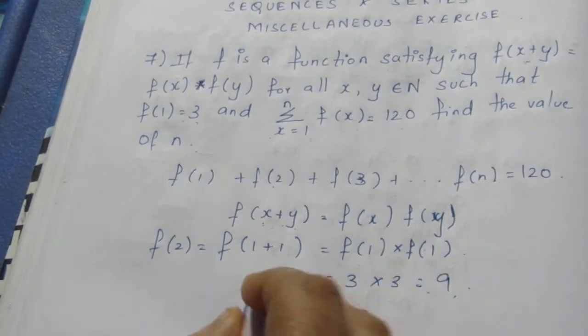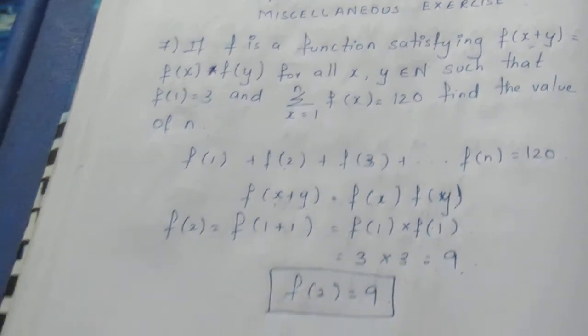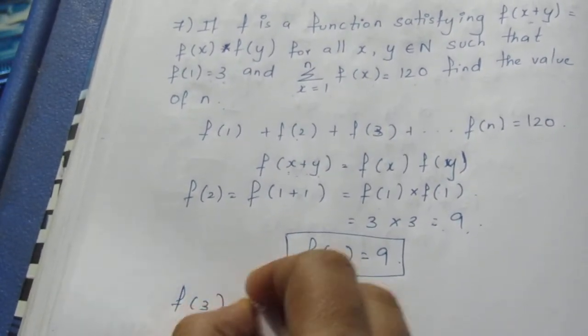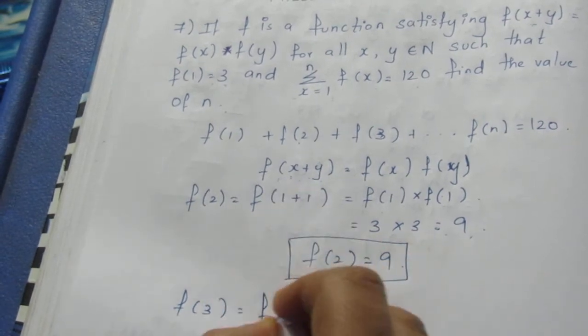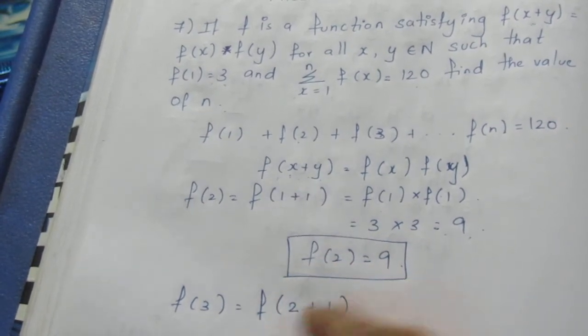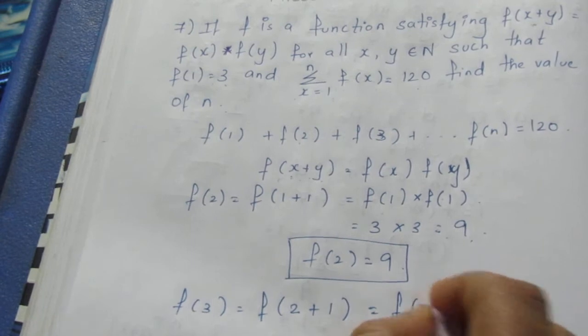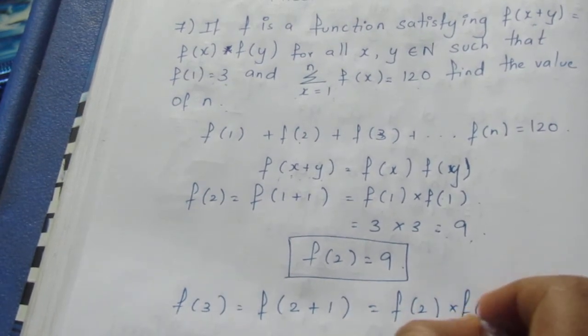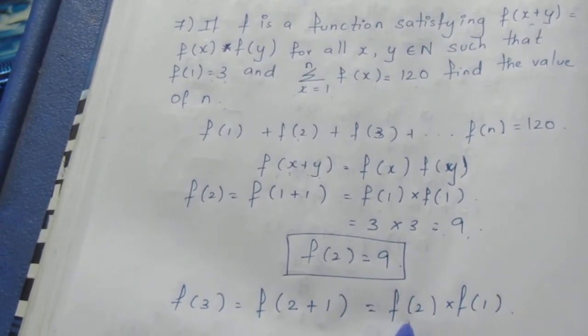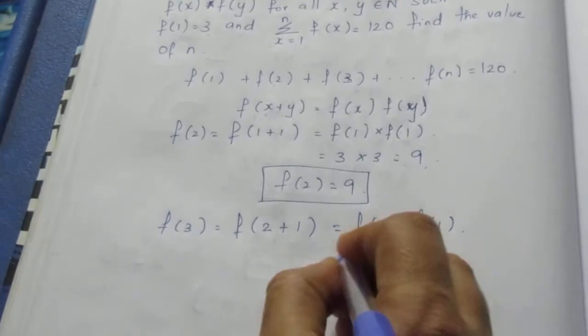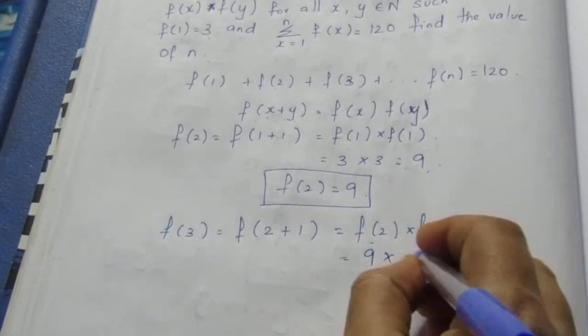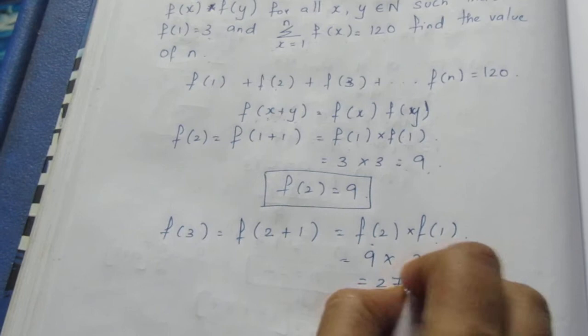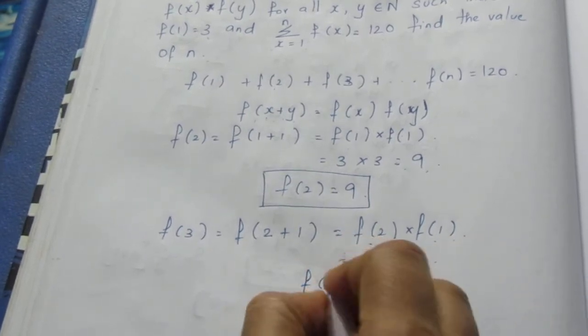Now we know f(2), so similarly we'll find f(3). For f(3), I'm going to take f(x+y) as f(2+1), which can be written as f(2) times f(1). We know f(2) is 9 and f(1) is 3, so this becomes 27. Therefore f(3) equals 27.